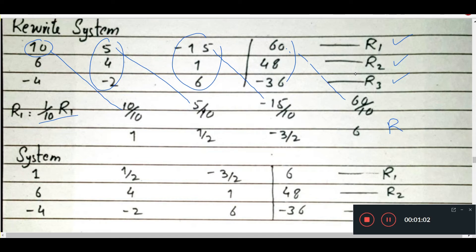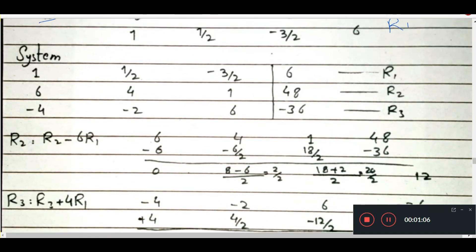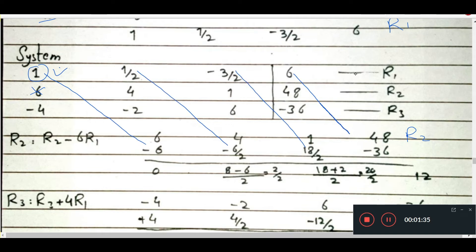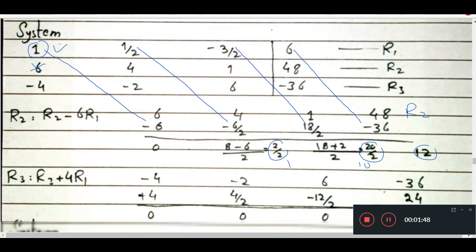The system now has R1 as: 1, one-half, negative three-halves, 6. We need to eliminate entries below the pivot. Multiply R1 by 6 and subtract to zero out that entry: one-half minus 6 gives negative 6, and the right-hand side gives 12.